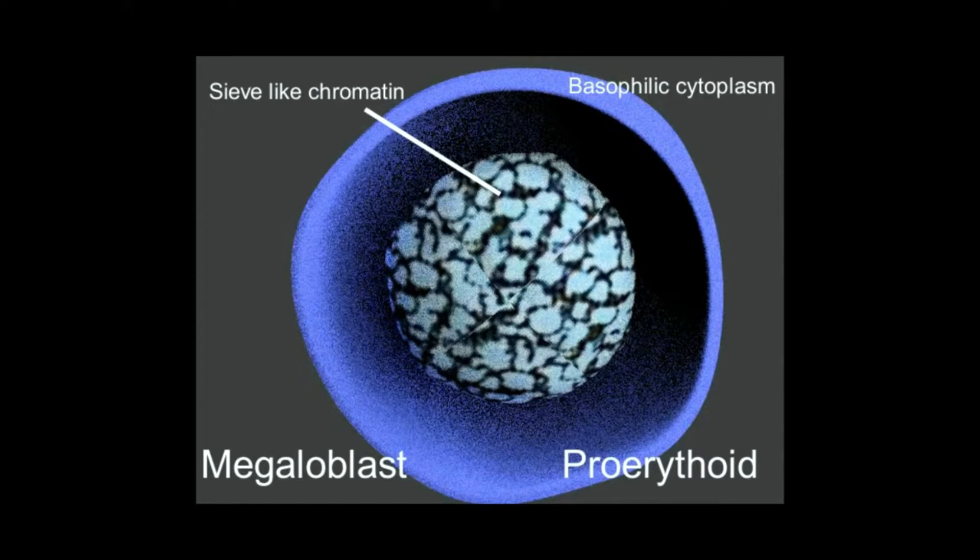Such cells with immature nucleus are prone to undergo destruction in marrow itself. This type of hematopoiesis is termed ineffective erythropoiesis. Ineffective hematopoiesis affects all cell lines but particularly red blood cells.